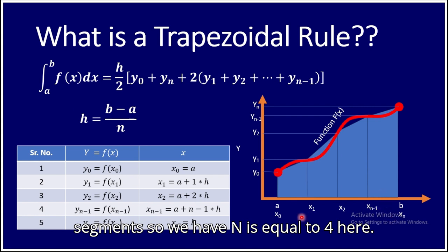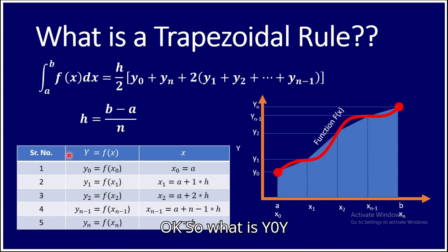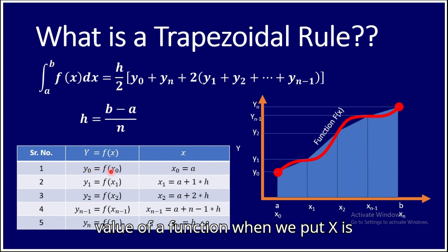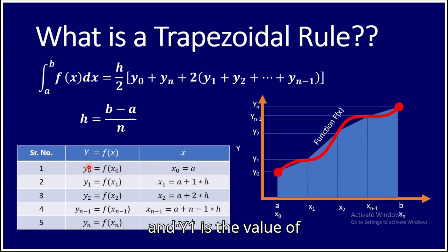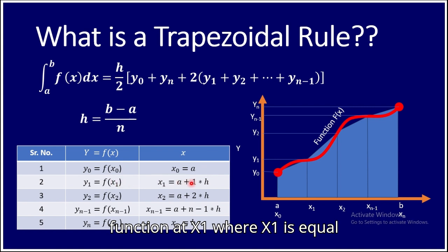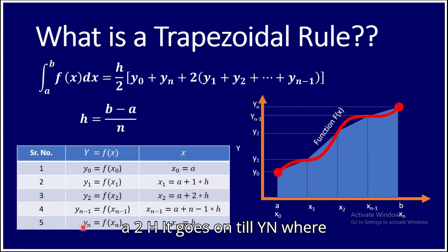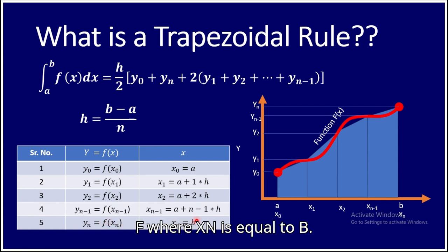Here we have n equal to 4. So what are y0 and yn in this formula? y0 is the value of the function when x equals x0, where x0 equals a. y1 is the value of the function at x1, where x1 equals a plus 1 times h. Then y2 equals f(x2) where x2 equals a plus 2h. This continues up to yn where yn equals f(xn) and xn equals b.